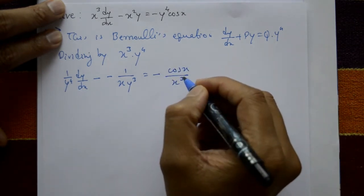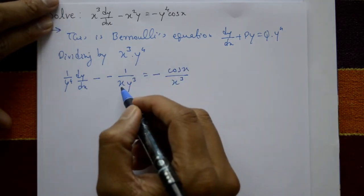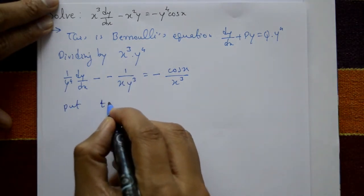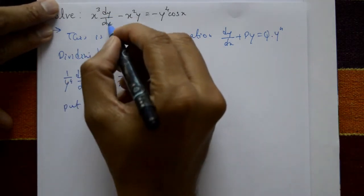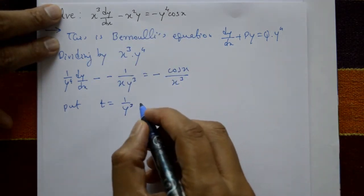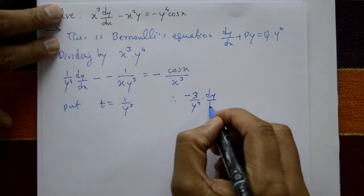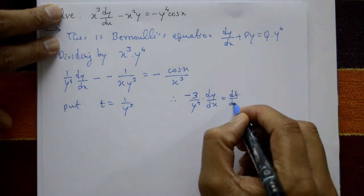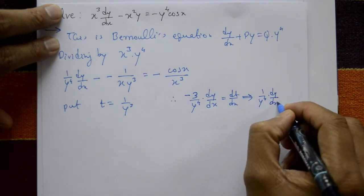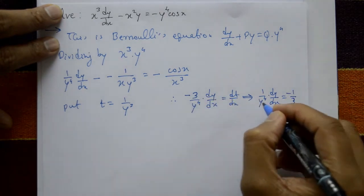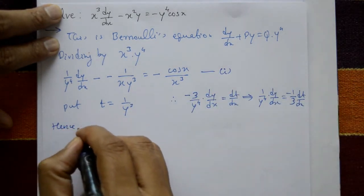Now applying Bernoulli's rule, put t equal to 1/y³. Differentiating, 1/y³ equals t, so differentiating with respect to x gives minus 3/y⁴ times dy/dx equals dt/dx, or (1/y⁴)(dy/dx) equals minus (1/3)(dt/dx). Substitute this result into equation number 1.